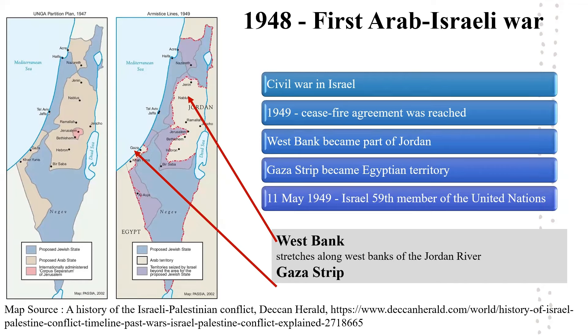The area of the West Bank stretches along the eastern border of Israel, along the Dead Sea and the West Bank of the Jordan River. That is why this area is known as the West Bank.